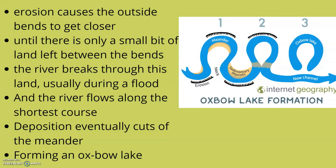Erosion causes the outside bends to get closer until there's only a small bit of land left between the bends. The river breaks through this land, usually during a flood, and the river flows along the shortest course. Deposition occurs and eventually cuts off the meander, forming an Oxbow Lake. Oxbow Lakes eventually dry up back into land.